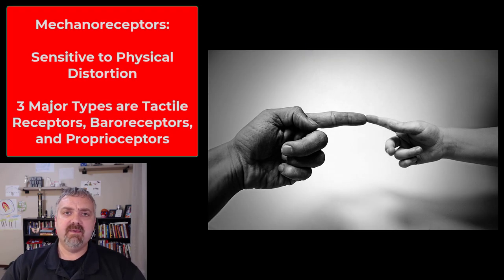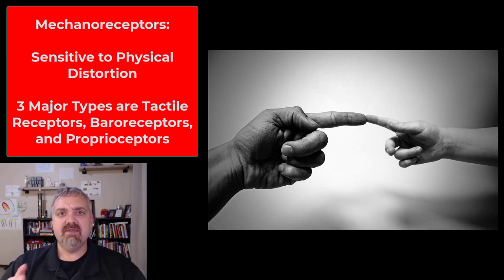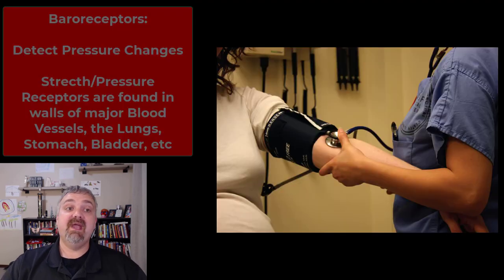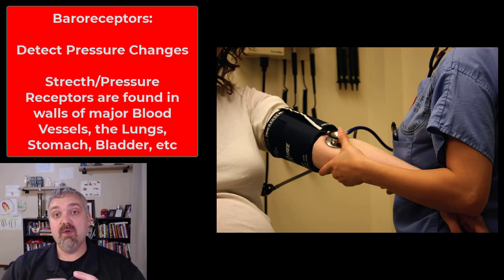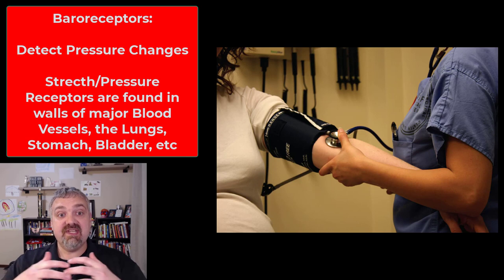The last group is mechanoreceptors — receptors that respond to physical distortion of their cell membranes, such as stretching, compression, and twisting. There are three types: tactile receptors (touch, pressure, vibration), baroreceptors, and proprioceptors. Baroreceptors monitor pressure changes in hollow organs — like the walls of blood vessels, your stomach, and your lungs — sensing changes in pressure.